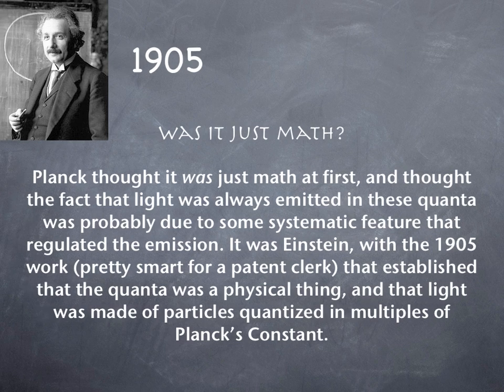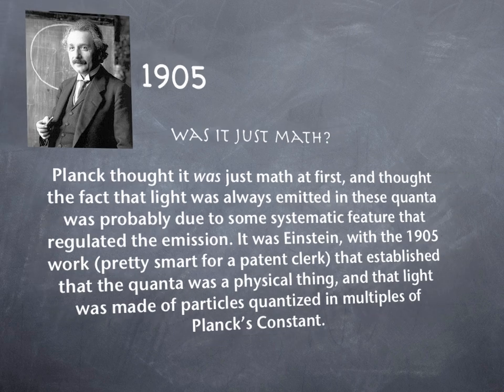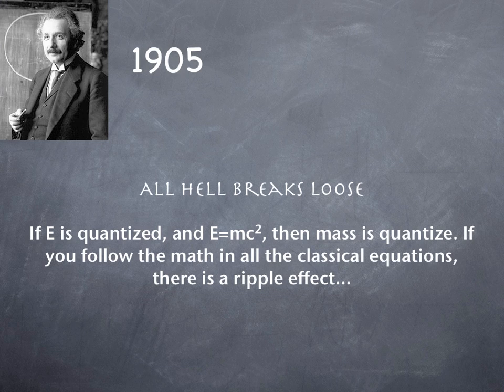This addressed the question of whether Planck's result was just math, because Planck thought his constant was just a math trick at first. He thought the fact that light was always emitted in these quanta was probably due to some systematic feature that regulated the emission — but there's also more fundamental truth to it. It was actually Einstein who established that the quanta was a physical thing and that light was made of particles quantized in multiples of Planck's constant.